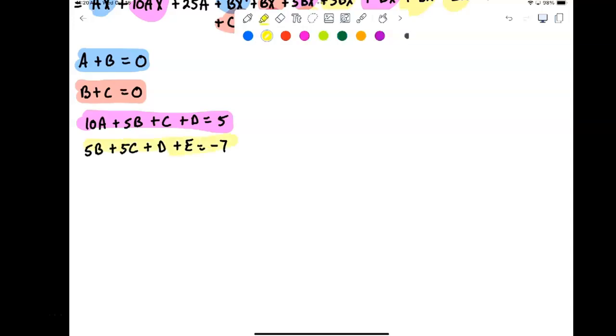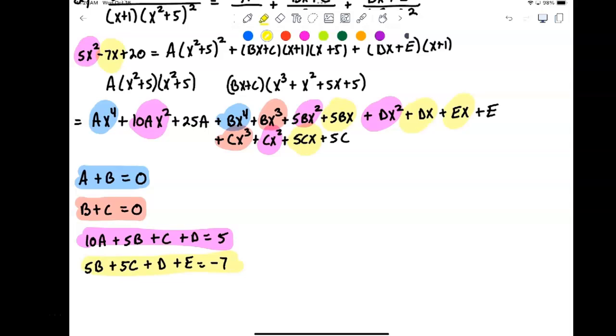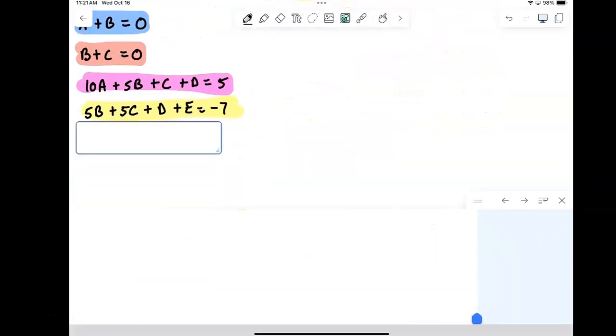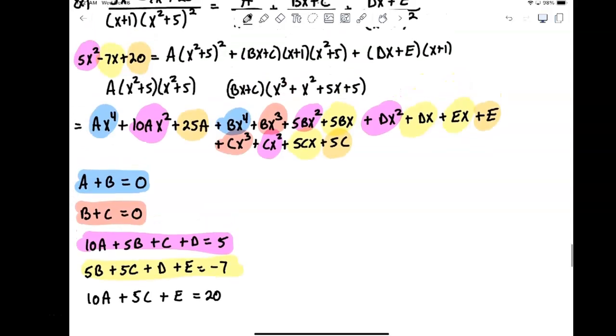And then we put together the final piece here. So 20, and I have a 25a, I have a 5c, and I have an e. So I put those together: 10a plus 5c plus e has to be equal to 20. So there we are again, equating my constant coefficients. So that gives me a system of 5 equations.